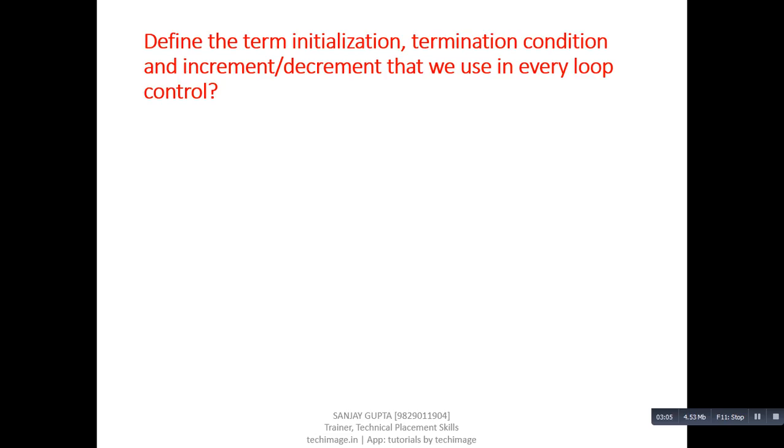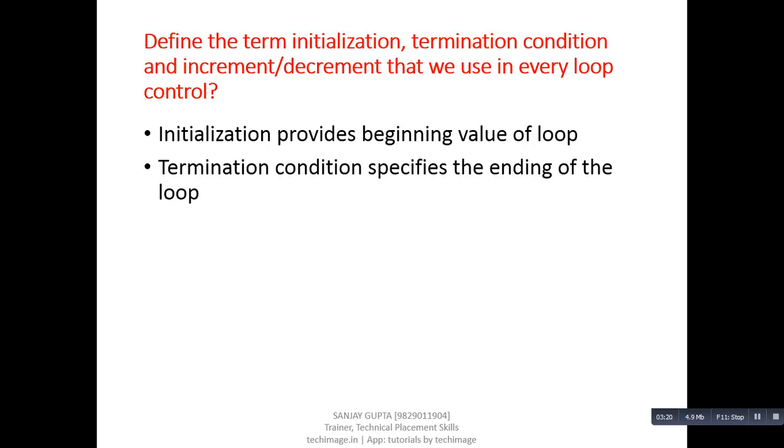Next question: Define the terms initialization, termination condition, and increment or decrement that we use in every loop control. Answer: Initialization provides beginning value of loop, termination condition specifies the ending of the loop, and increment or decrement increases or decreases the loop counter.